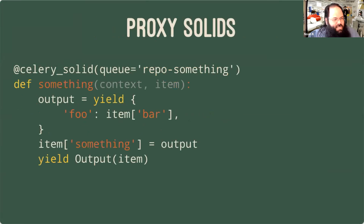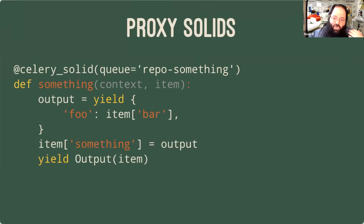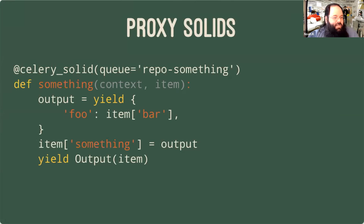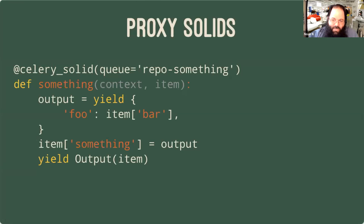We need to expose that remote solid into Dagster's view of the world. So we've written a decorator that extends @solid to create what I call proxy solids. The decorator takes all the same arguments as @solid, but some additional ones like which RabbitMQ this solid will live on. The first yield yields what arguments should be sent to the remote Celery task. The return from the first yield will be the output from the remote solid — whatever Celery returned ends up in output there. And then after that, you can do normal Dagster stuff: data manipulation, yielding outputs, asset materializations, all that kind of stuff.